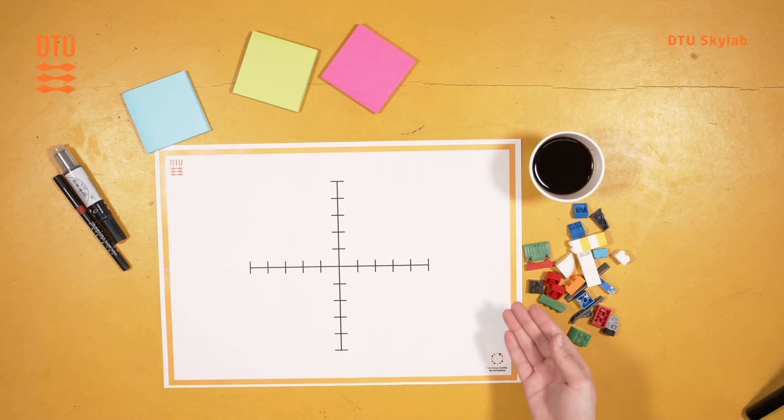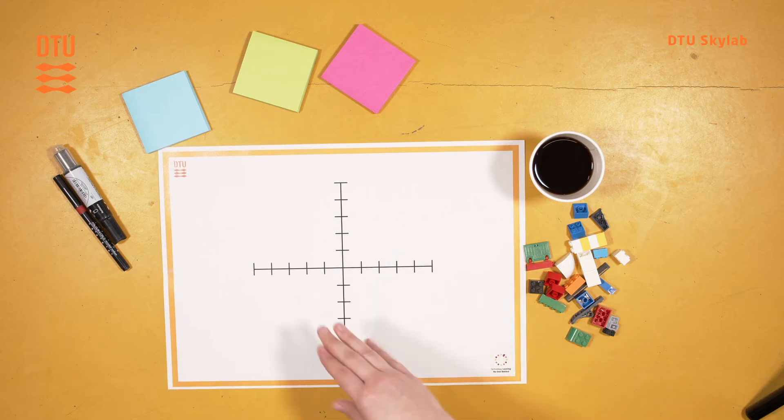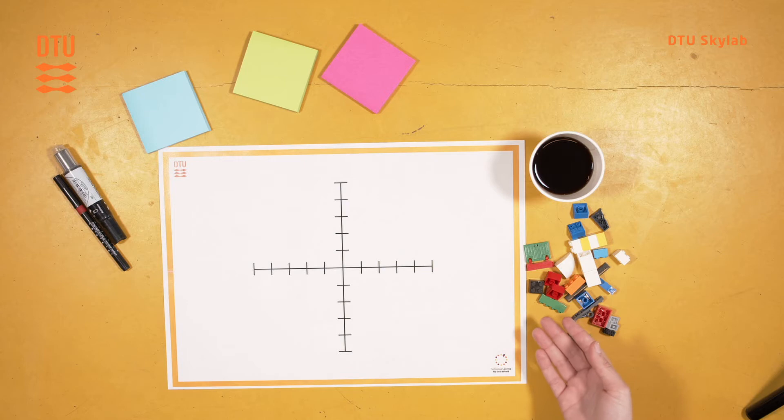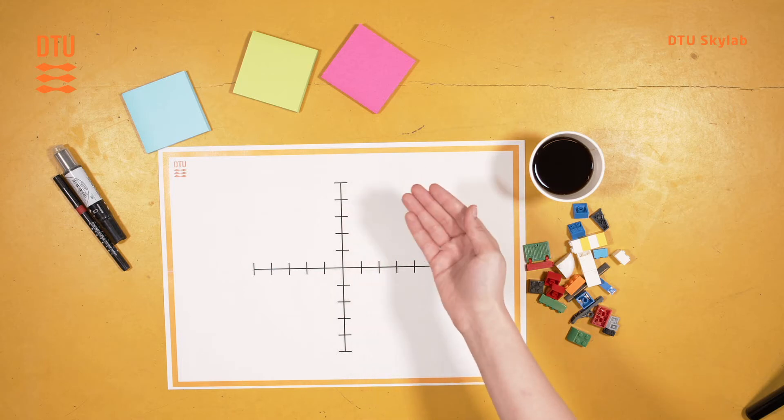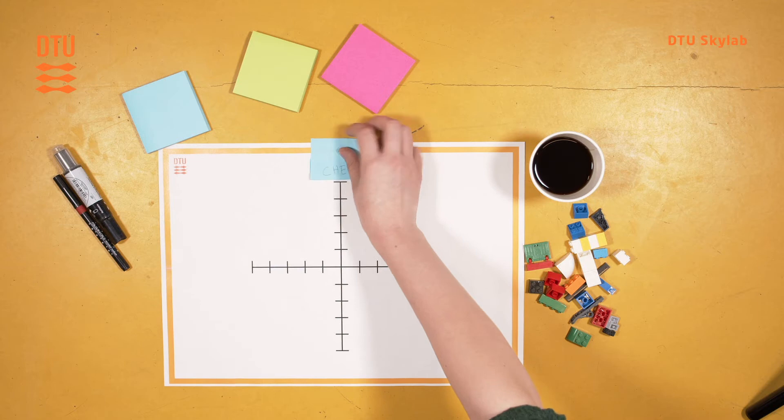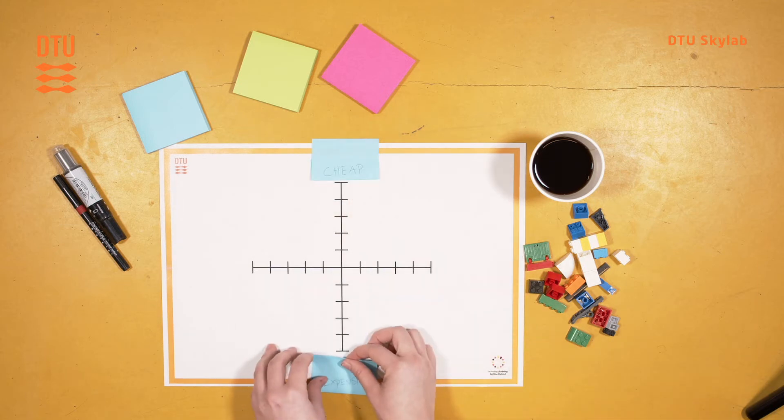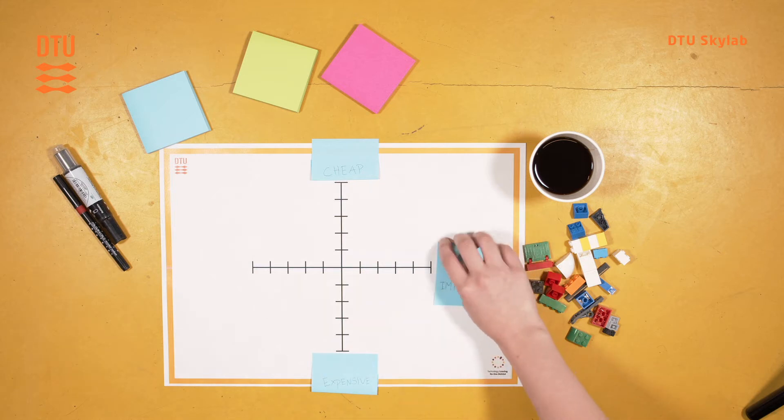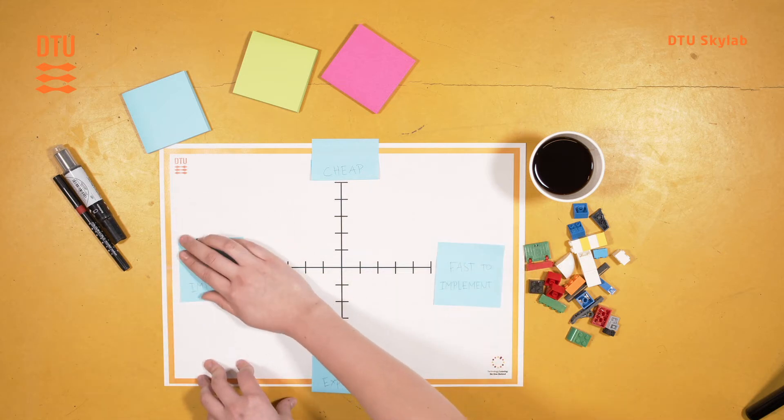The most critical part of using matrix sorting is to define your criteria. In this example, we will use the criteria that concepts should be cheap to produce and fast to implement. Your criteria should always have a formulation that defines a high and a low. For example, here it would be cheap and expensive, and for the other axis it would be fast to implement and slow to implement.